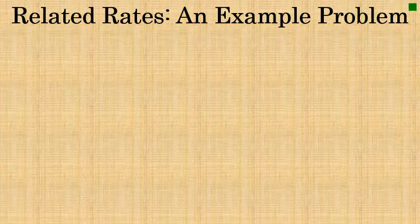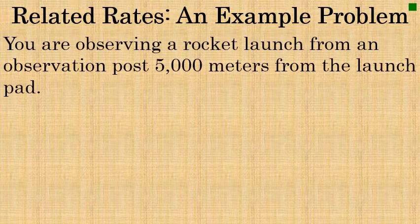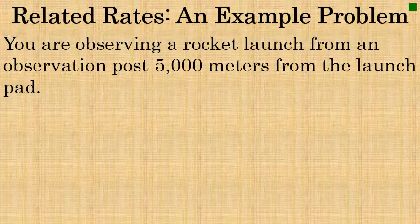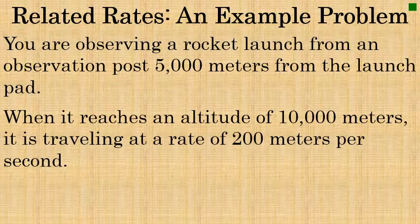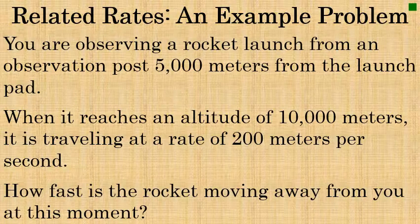Now let's do an example problem. Say you were observing a rocket launch from an observation post 5,000 meters from the launch pad. When the rocket reaches an altitude of 10,000 meters it is traveling at a rate of exactly 200 meters per second. The question is: how fast is the rocket moving away from you at this exact moment?